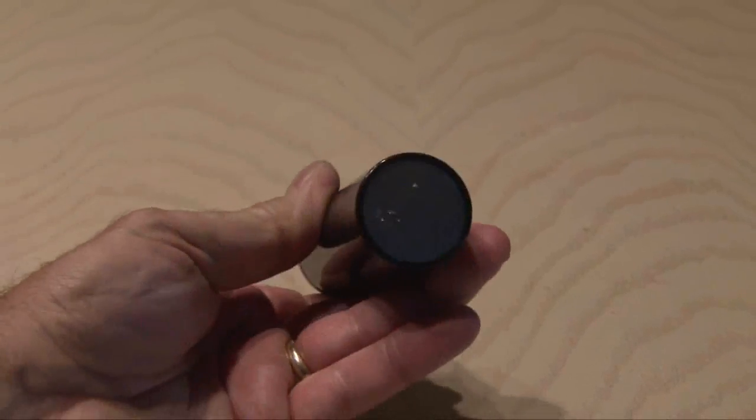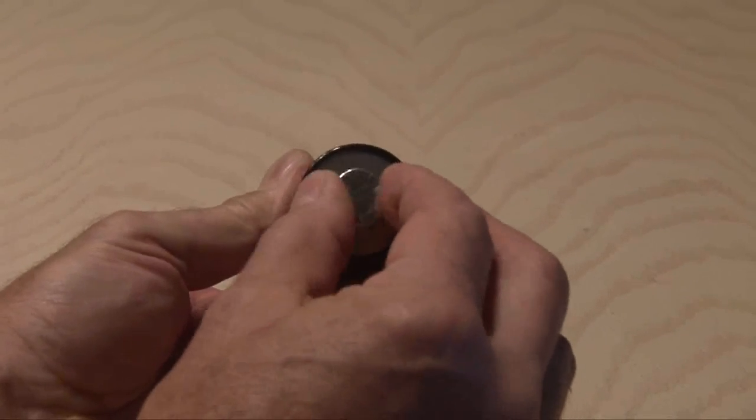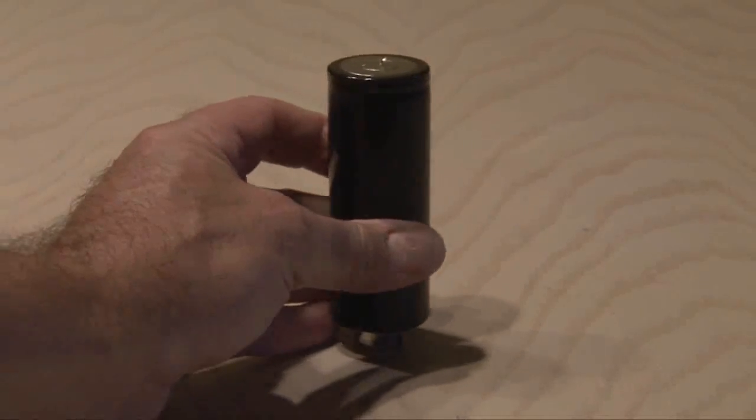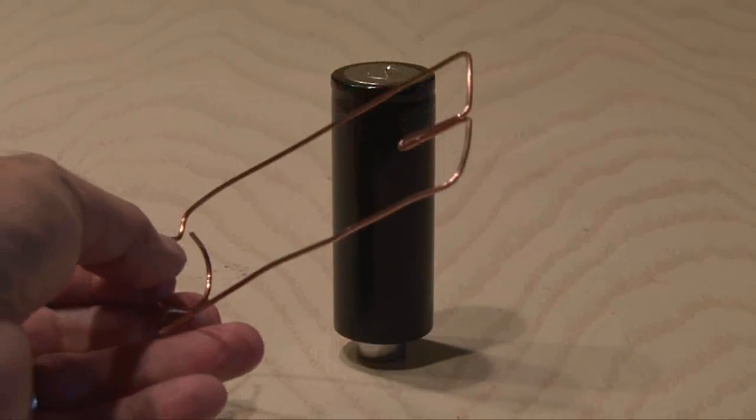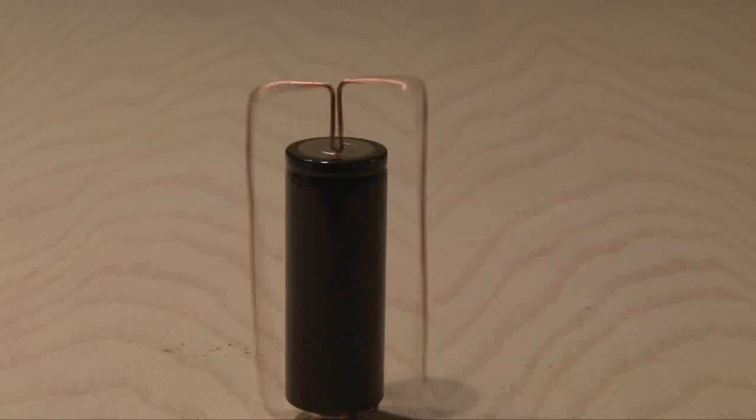Take a neodymium magnet and stick it on the end of the battery, and then a piece of copper wire bent into shape, wrapped around the battery, and off it goes.